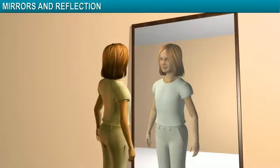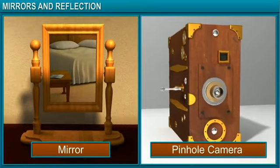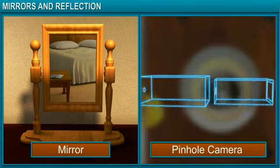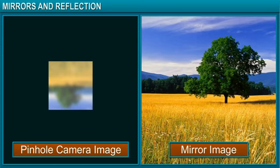Both shadows and images have their uses. You look at your image in the mirror every time you get ready to go out, and the shadow cast by your umbrella keeps you cool on a hot sunny day. Images are formed in mirrors as well as in cameras. However, the images formed in a pinhole camera are different from those formed in a mirror. The image of a tree formed in a pinhole camera is inverted.